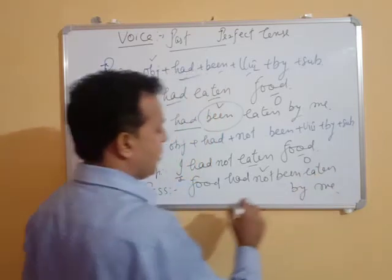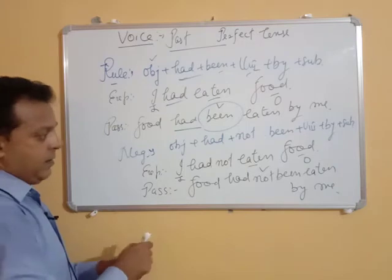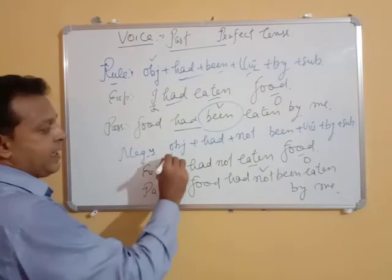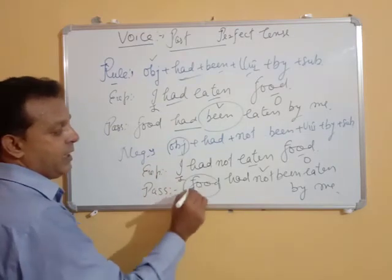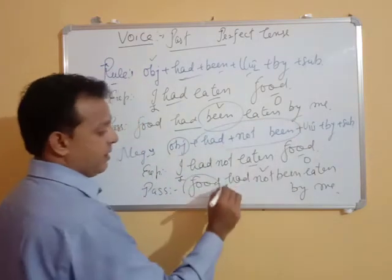How did that happen? First we need the object — 'food' — then 'had not been,' keeping 'had not' exactly the same.